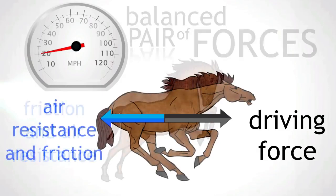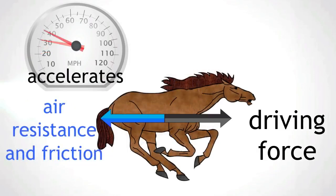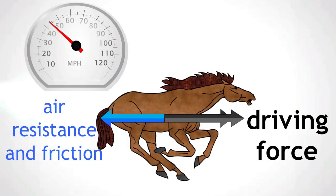If though the horse accelerates, the driving force must be greater than friction and air resistance. The driving force is now no longer balanced by friction and air resistance. These forces are now unbalanced.